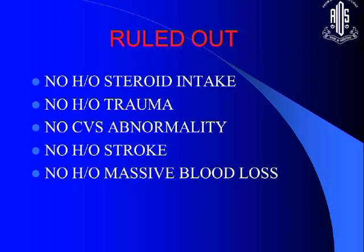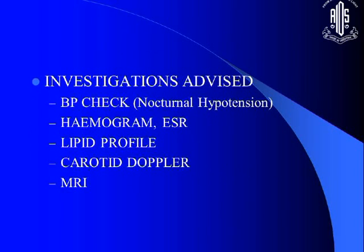We ruled out whether he had any steroid use, trauma, serious systemic abnormality, or history of stroke or massive blood loss — each of which can make a disc look abnormal like glaucoma. We checked nocturnal hypotension, did a hemogram and lipid profile to rule out hyperviscosity, performed a carotid Doppler to check for obstruction, and did an MRI to find out whether a pituitary tumor was pressing and causing changes that could mimic glaucomatous damage.